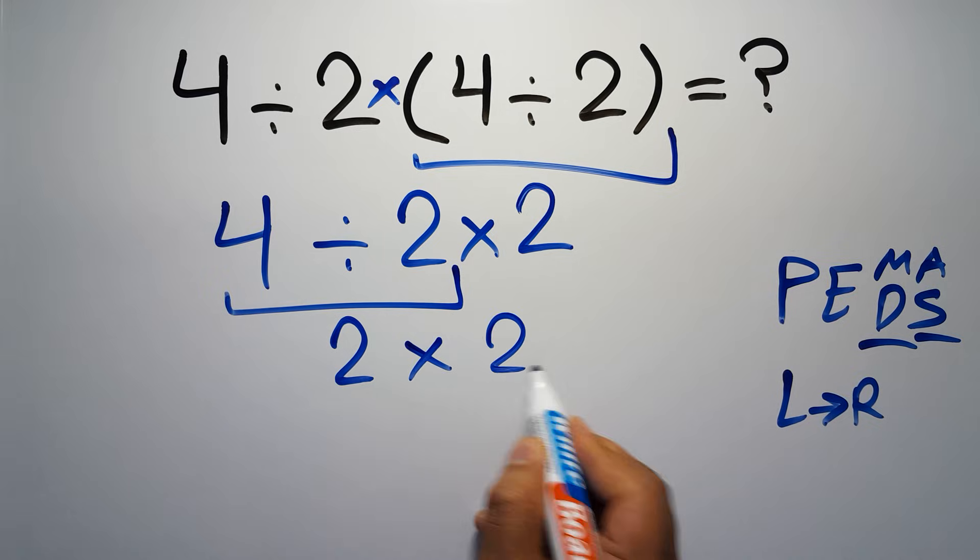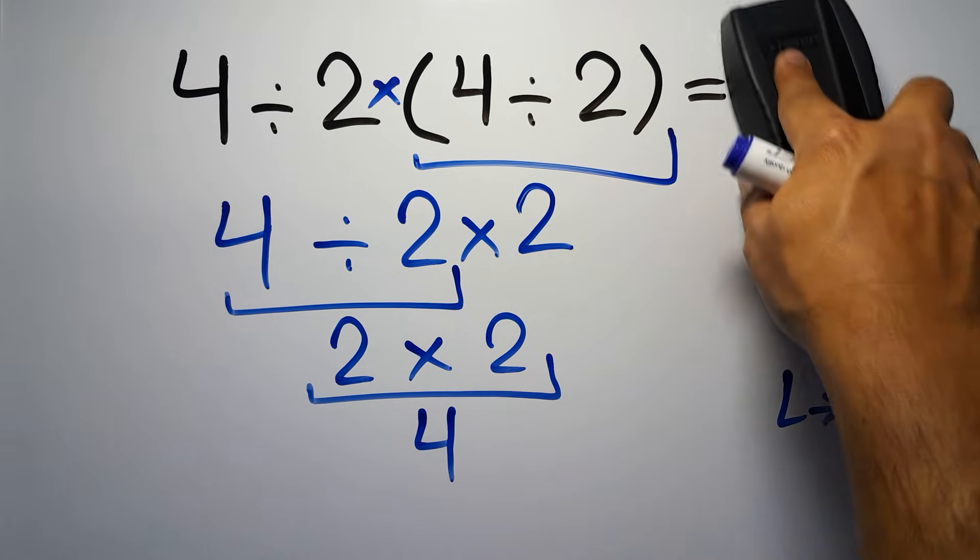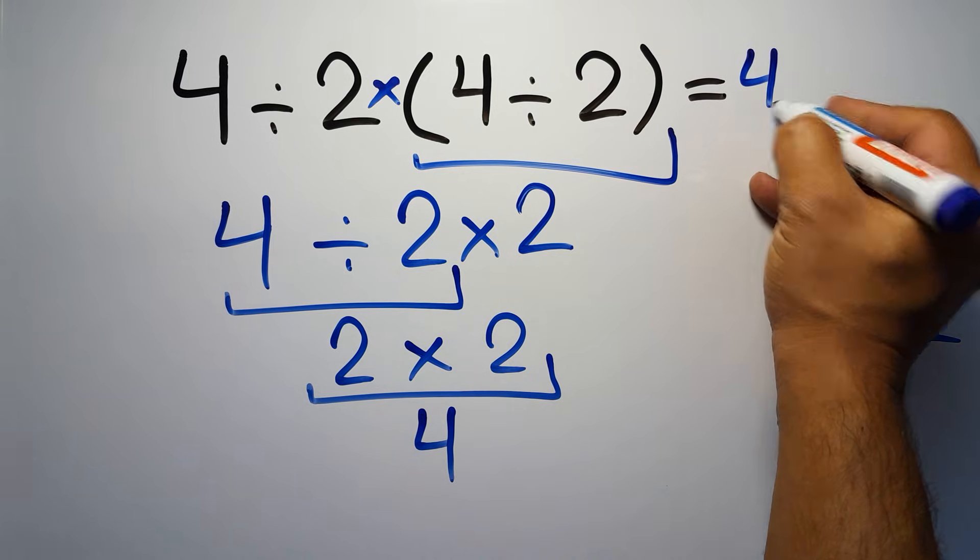So 2 times 2 which equals 4, and this is our final answer to this problem. The correct answer is 4.